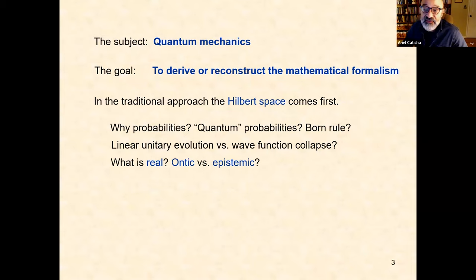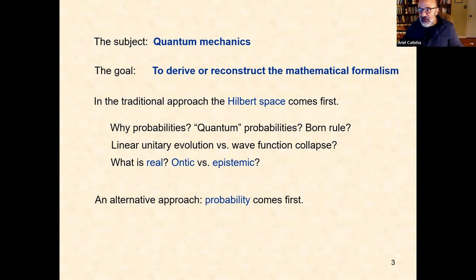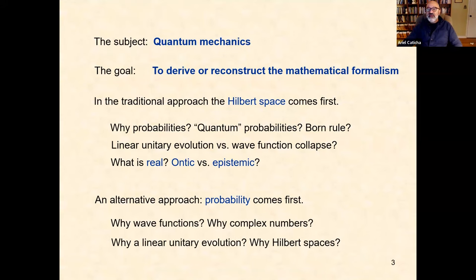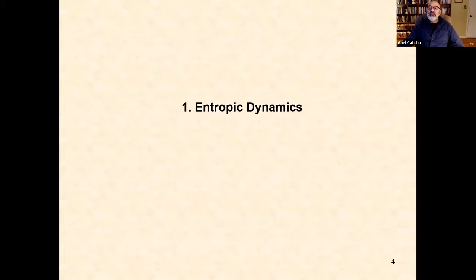Different interpretations of quantum mechanics offer different answers. What we're following here is an alternative approach in which it is probability that comes first. This is a theory of inference. The questions we ask are different: why do we have wave functions in a probabilistic theory? Why do we have complex numbers? Why is the evolution linear and unitary? Where do Hilbert spaces come from? Our goal is to derive many of these features from presumably basic assumptions.